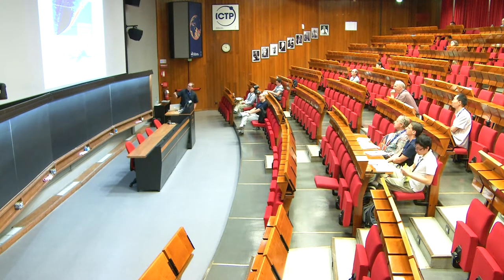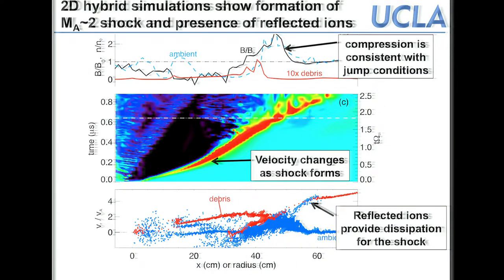In more detail: a space-time plot of the magnetic field shows the bubble, the magnetic pulse at the edge steepening into a shock, and the point at which shock formation occurs. Line-outs at that time show the magnetic field (bubble then shock ramp) in black and the ambient ion density in blue — they correspond, confirming the shock is carried by ambient ions. The debris (red) has already stopped. Phase space velocity as a function of distance shows debris stopped, ambient swept and sped to Mach 2, and a ring signature indicating reflected ions providing dissipation.